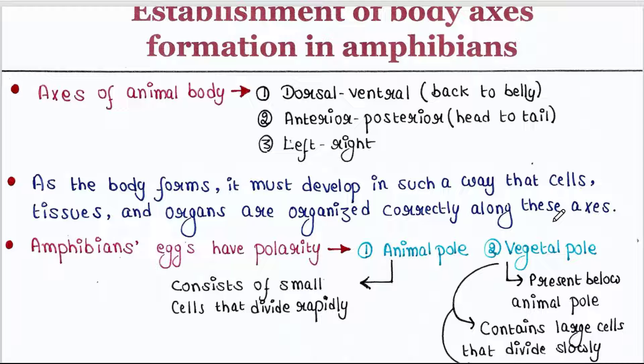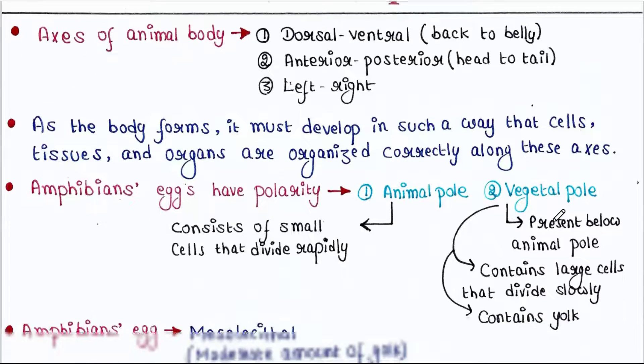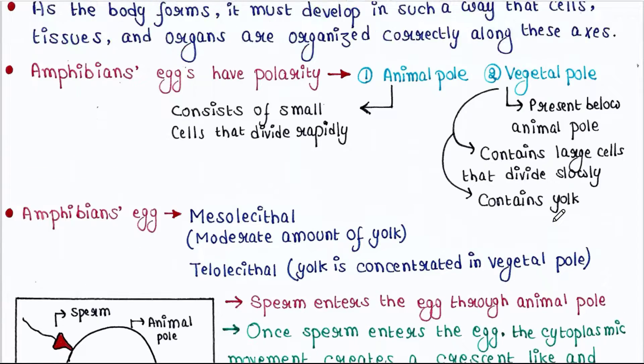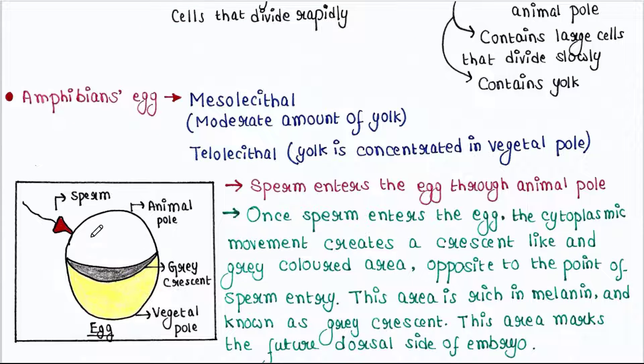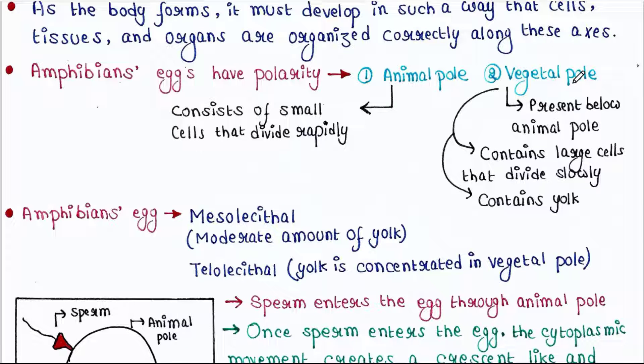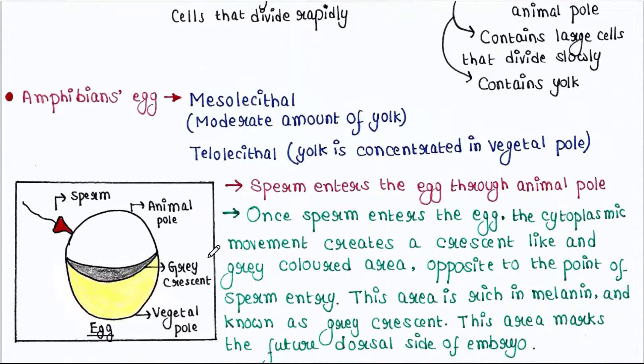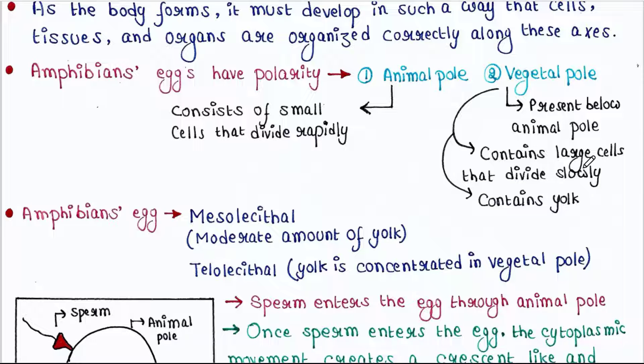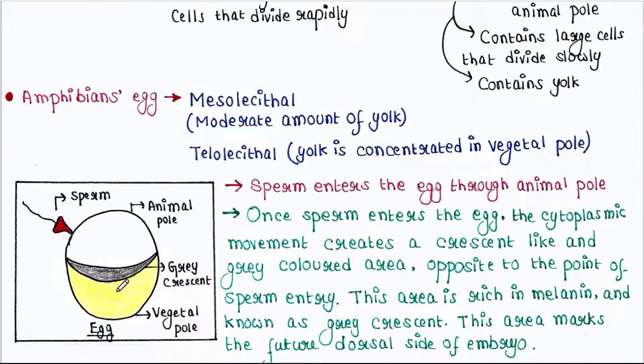Amphibian eggs have polarity. It has two poles: animal pole and vegetal pole. Animal pole contains small cells that divide rapidly. The vegetal pole is present just below the animal pole. Vegetal pole contains large cells that divide slowly.